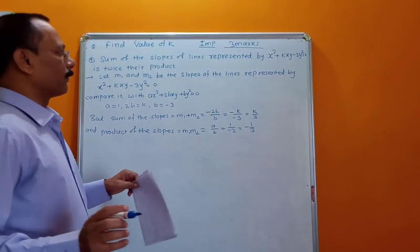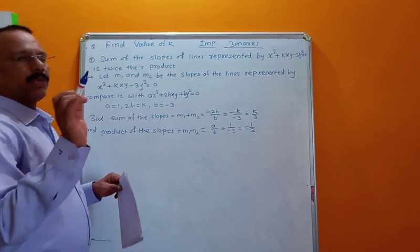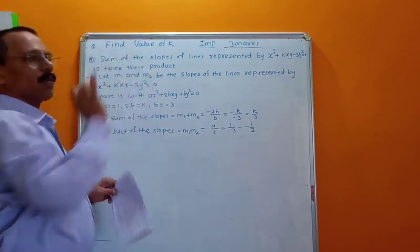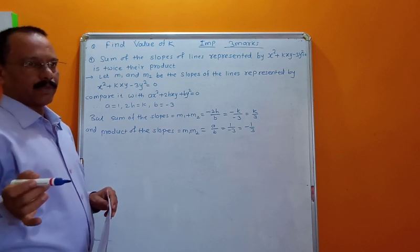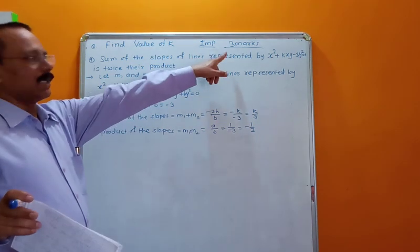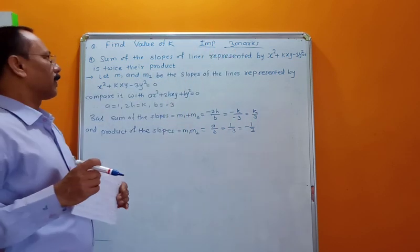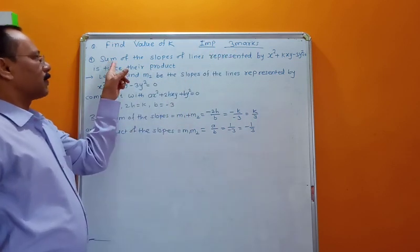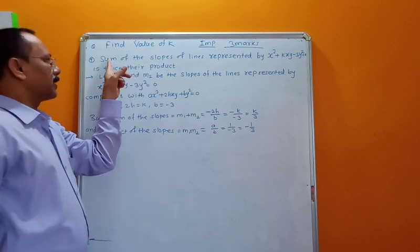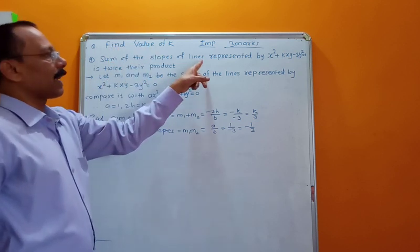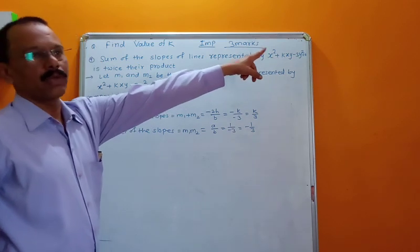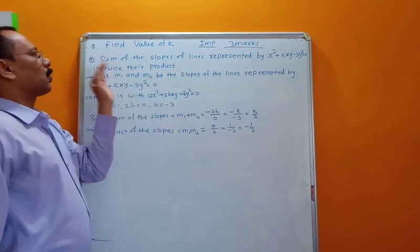Hi friends, today we are going to find the value of k. It is the next topic after the separate equation — it is a very important part and it is for three marks. The question is: find the value of k if sum of the slopes of lines represented by x² + kxy − 3y² = 0 is twice their product.